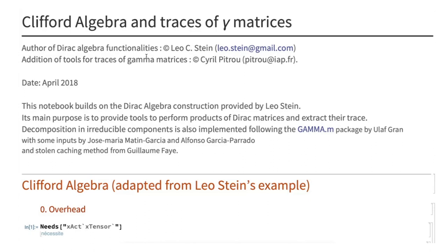It's a strange decision to talk about this, because the power of Xact is usually to show you the indices. Normally mathematicians use notation where you don't see the indices of tensors, but in physics we want indices so we know what we're talking about. Here I will show that even though Xact was designed to show you indices, it can still be used to do powerful and interesting computations in an index-free notation.